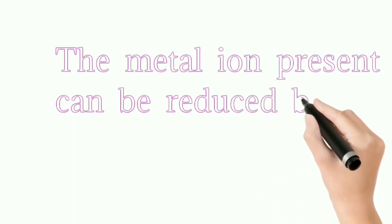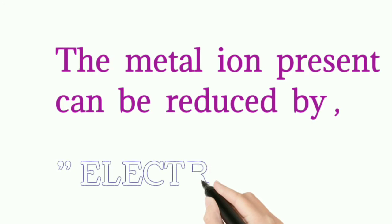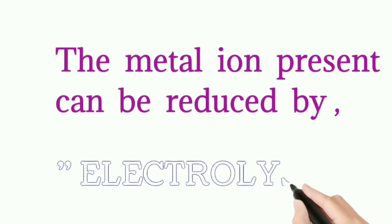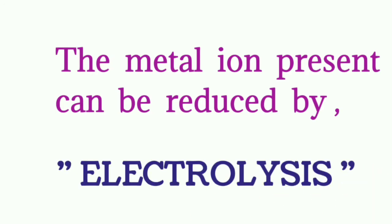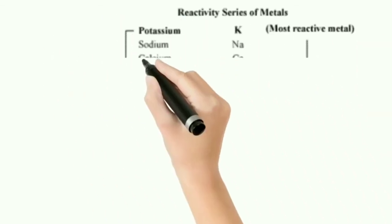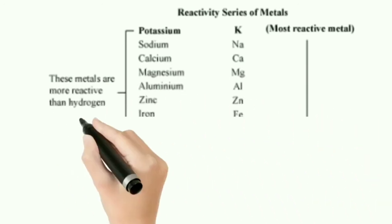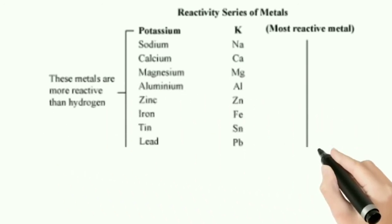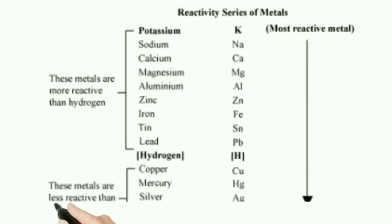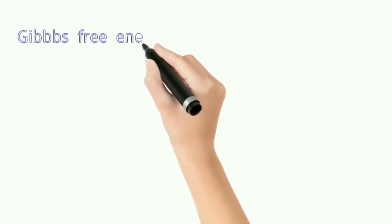For that we should know some reactivity series of metals. The reactivity series of metals includes: sodium, potassium, calcium, magnesium, aluminium, zinc, iron, tin, lead — which are all present above hydrogen and are all active metals.